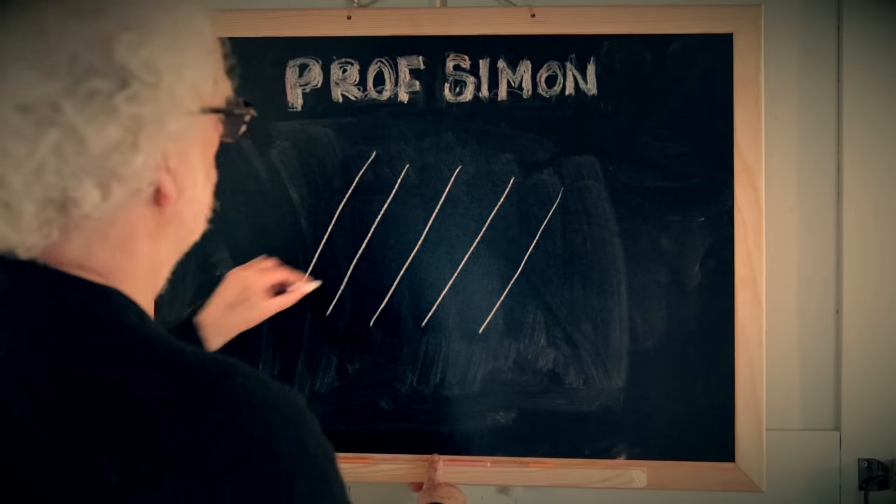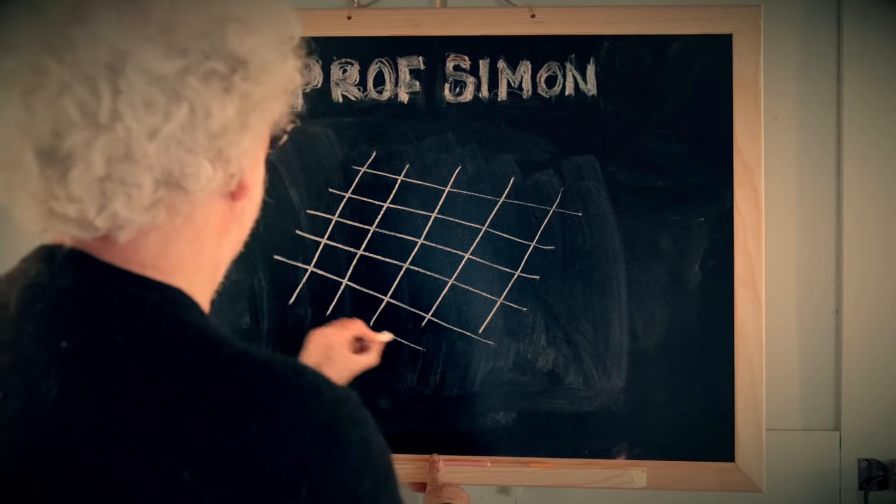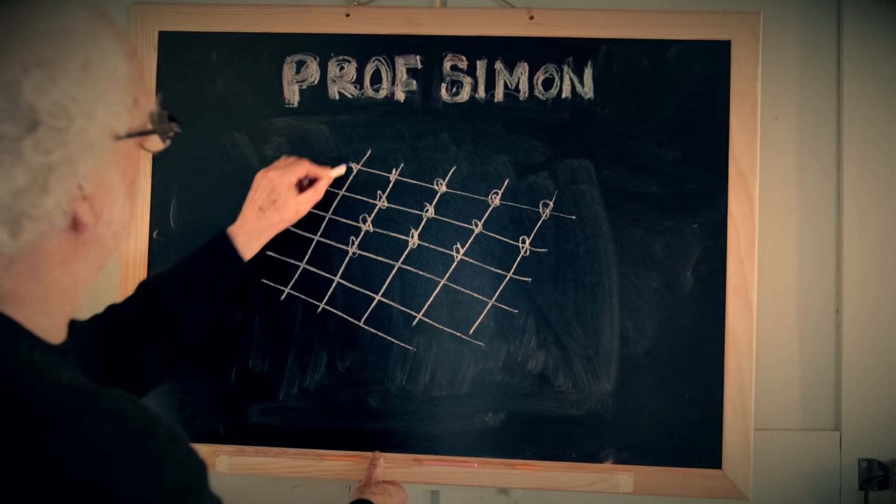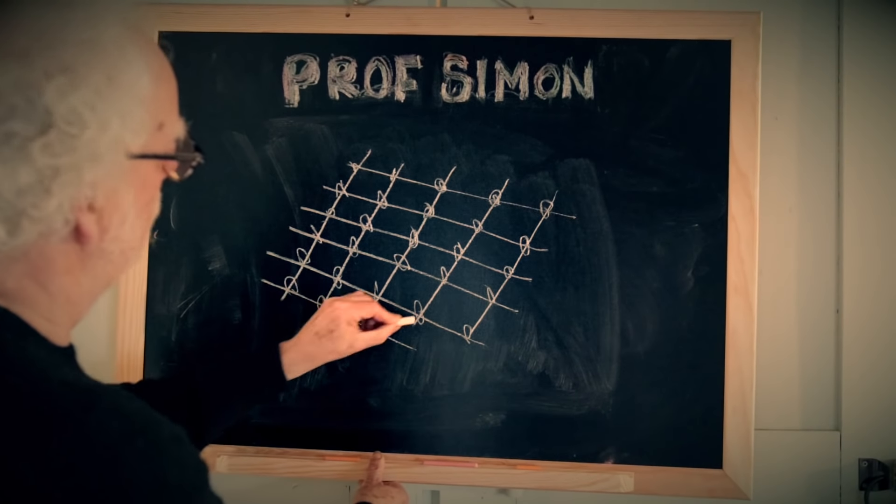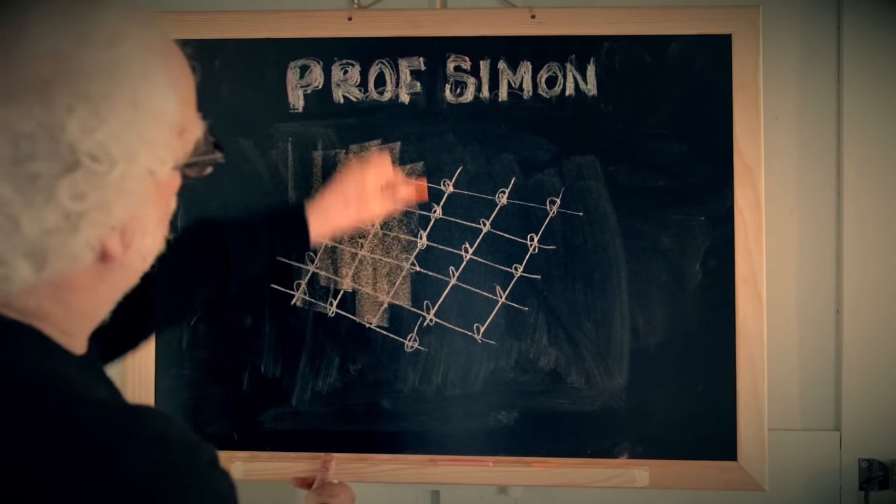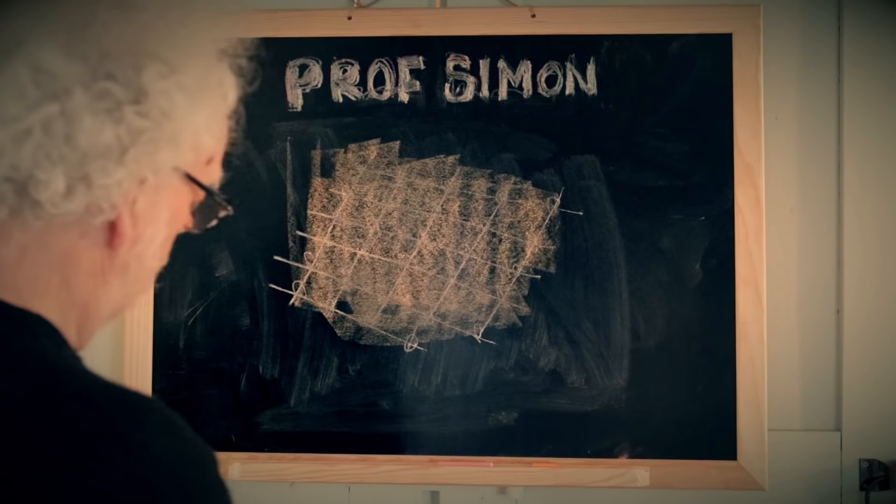For years, engineers have fixed the brittle nature of concrete by using steel rebar to absorb the tensile loads of any bending force on a brittle slab of concrete.